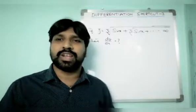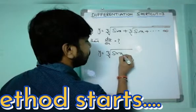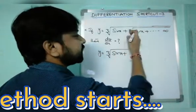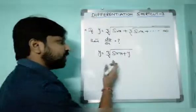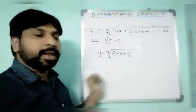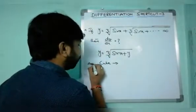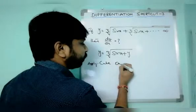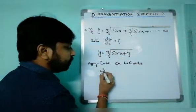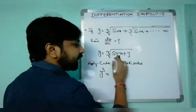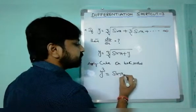It's very easy. The method is: y equals the cube root of sine x plus the cube root of the same function going on — so let that inner part also equal y. Now apply cube on both sides: y³ equals sine x plus y to the power one-third, and cubing gives y³ equals sine x plus y.